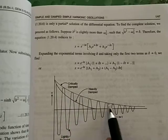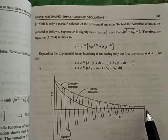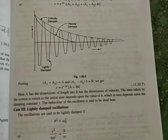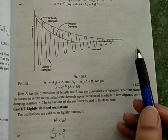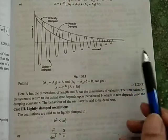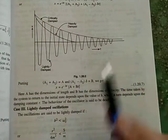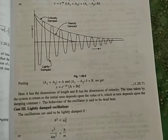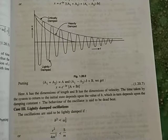In critical damping, the system takes more time to decrease to zero and covers the full range before returning to equilibrium. The time taken for the system to return to its initial state depends on the value of b, which in turn depends on r. This behavior is called deadbeat. Next, we take lightly damped oscillations, where damping is very small and b² is less than ω₀².